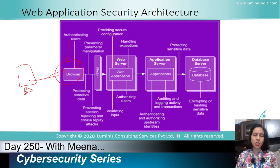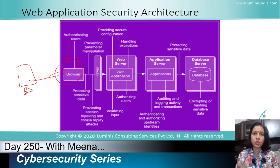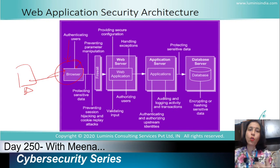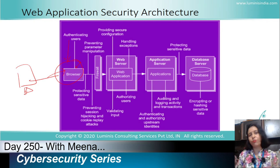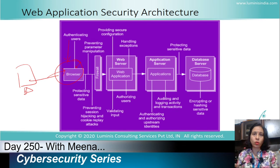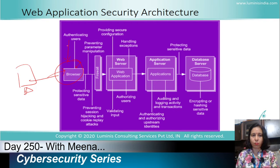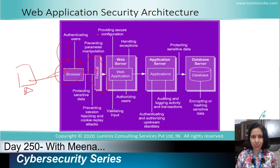We should allow only authenticated users to have access to the web app. For example, when we access Facebook — which is also a web app — we need to provide credentials. The HTTPS protocol will encrypt the data, and the system will also ask for a username and password. If we have dual authentication, it will also send a code to our email or phone. Protection starts at that point.